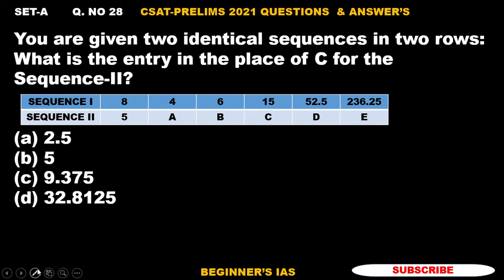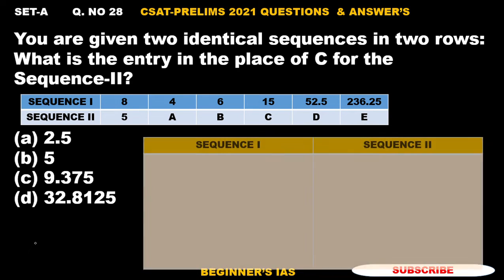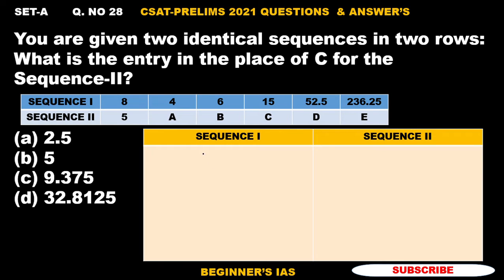By the sequence 1, if you find this pattern, we can identify C. Let us try to find out the pattern followed by Sequence 1. Here, 8 multiplied by 1/2 gives 4. With 4, I'm multiplying 3/2, which gives 6. And then with 6, if I multiply by 5/2, I'm getting 15.